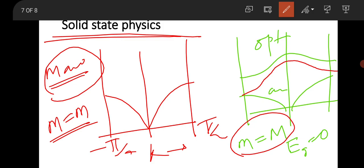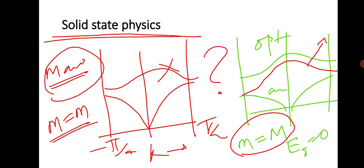The conceptual question was: when you make both masses equal in the diatomic lattice, the bandgap becomes zero but you still have an optical branch. Yet in the monoatomic lattice, all atoms have the same mass, but there is no optical branch at all. So what is the cause of this difference? This is a very deep question that requires careful reasoning and will take considerable time to arrive at a complete answer.